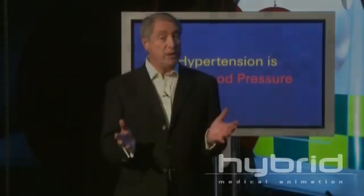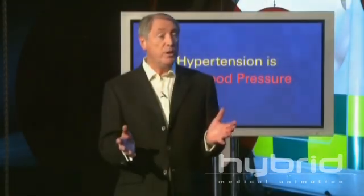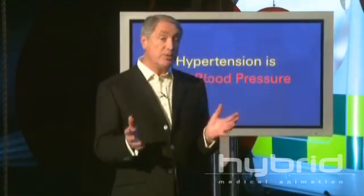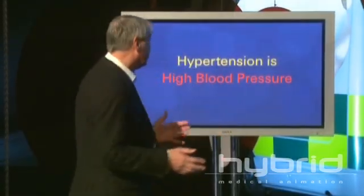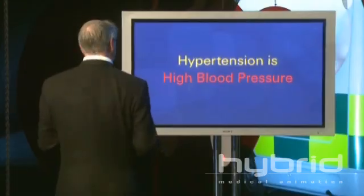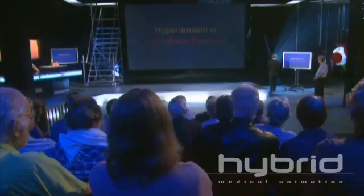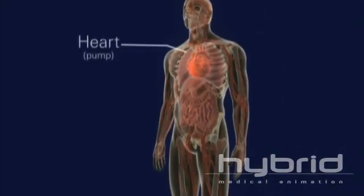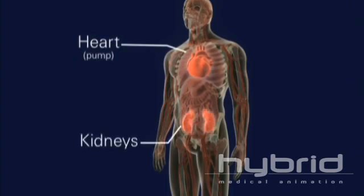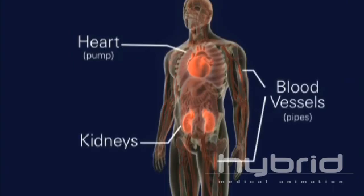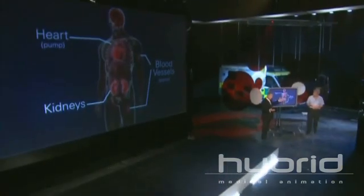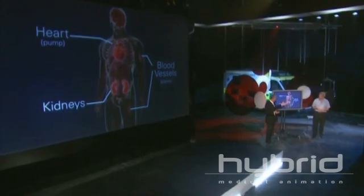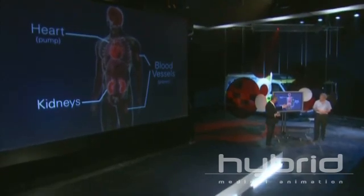Before we talk about hypertension, we need to look at the normal circulation and normal blood pressure. The circulation consists of a pump — the heart — which is pumping blood through a series of pipes, the arteries, delivering oxygen and nutrients to the tissues.